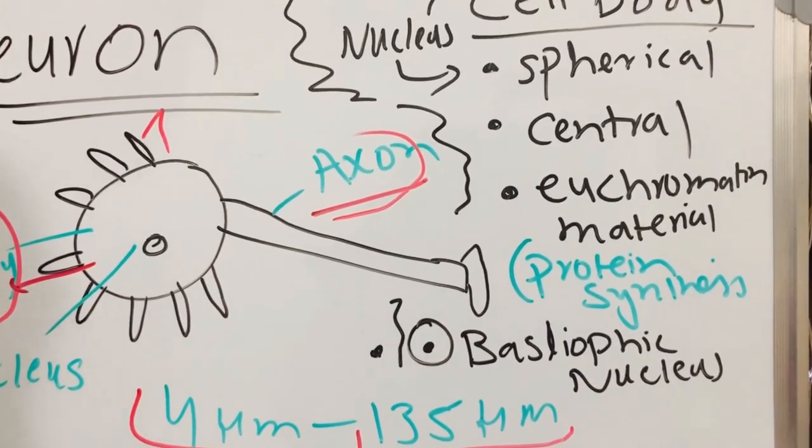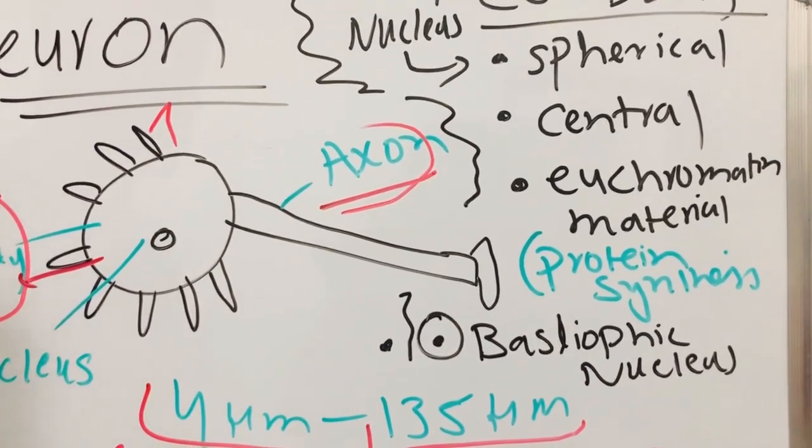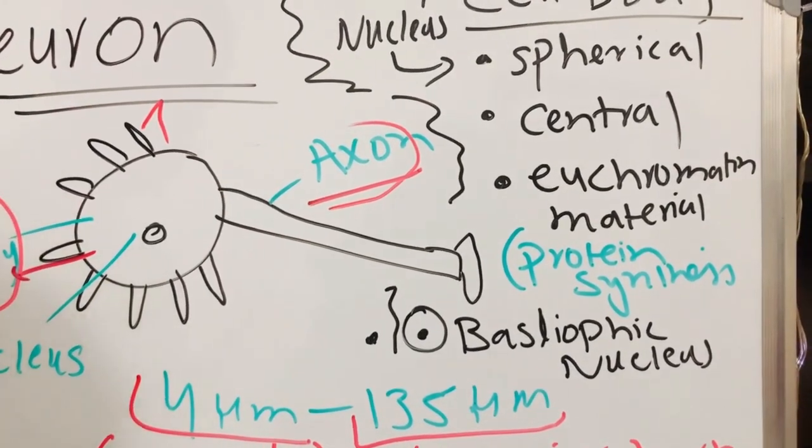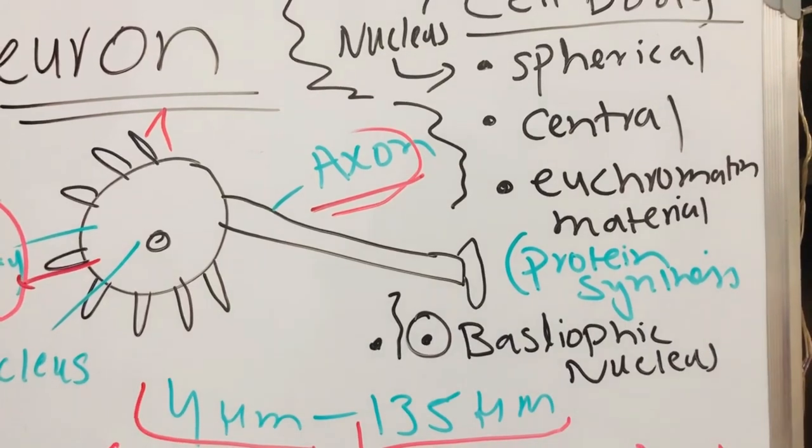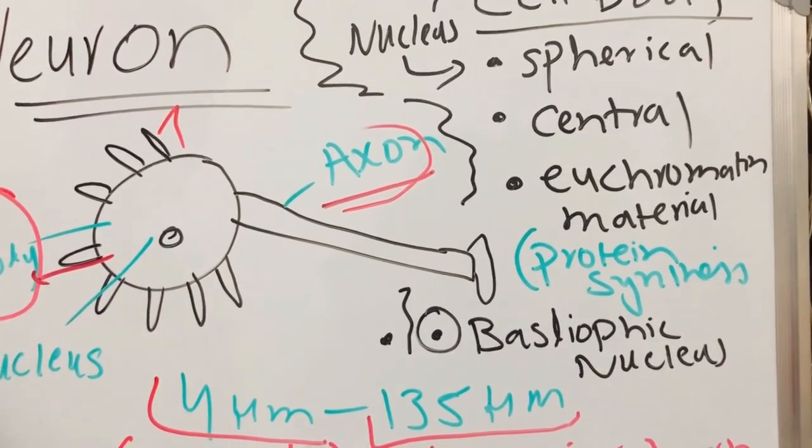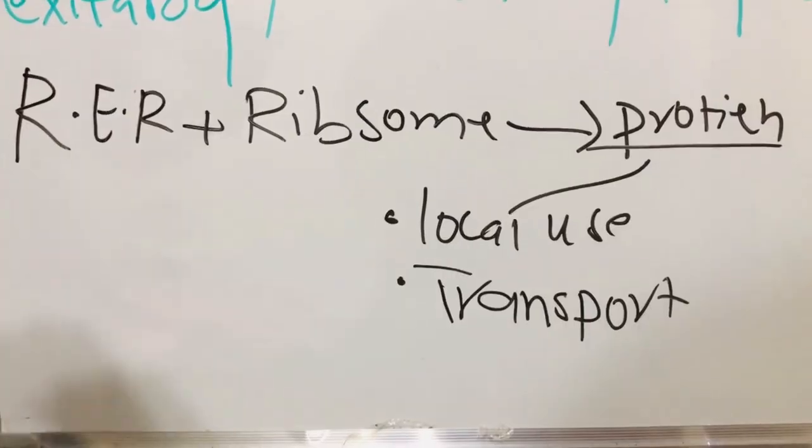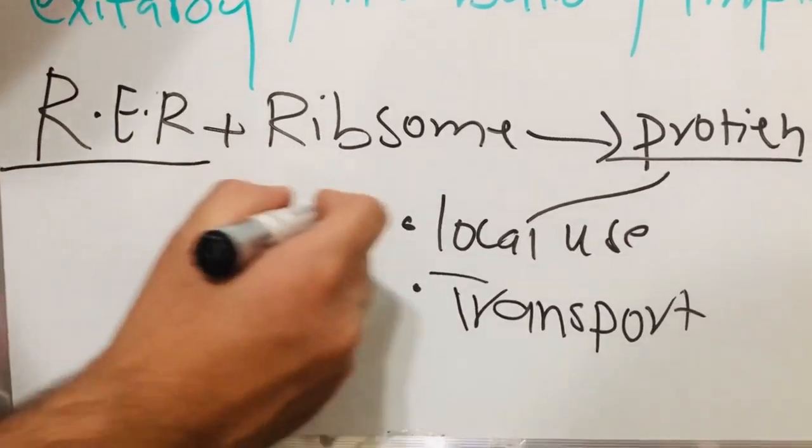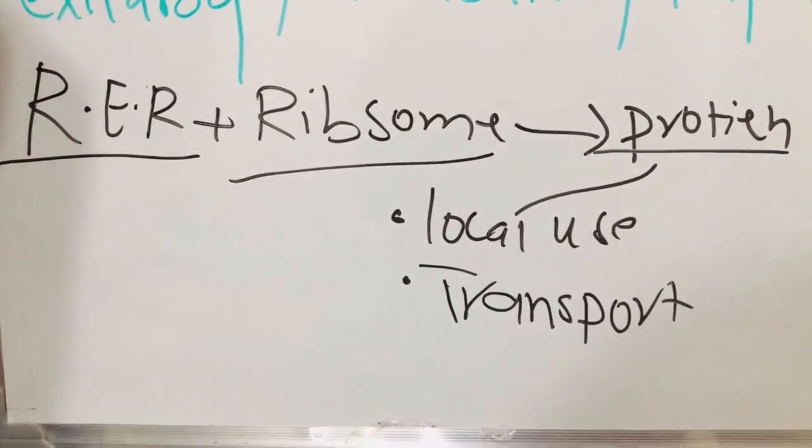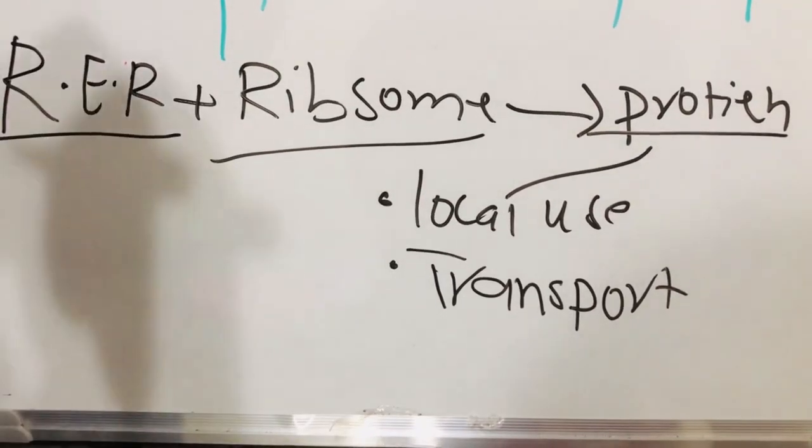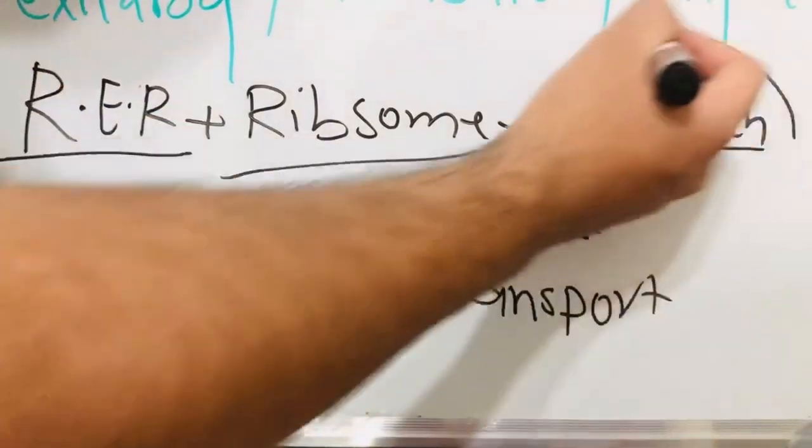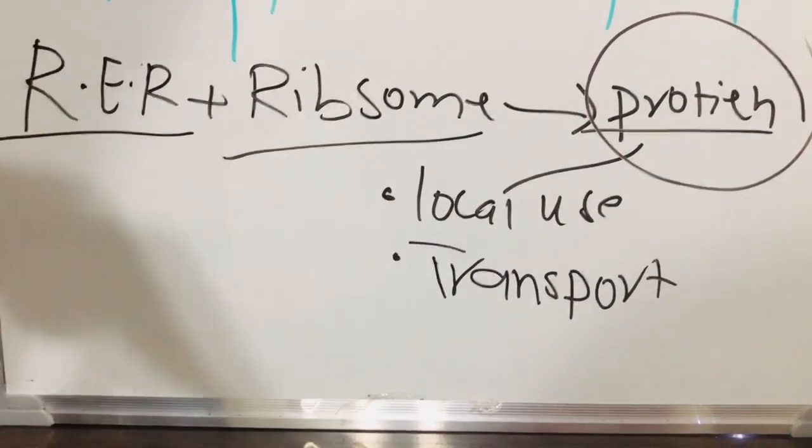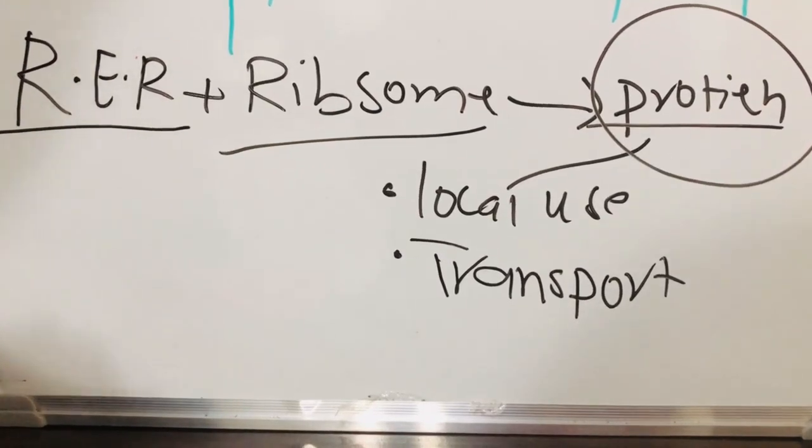The euchromatin materials are used for the synthesis of protein, and we have basophilic nucleus as well. The protein is synthesized via the euchromatin. This neuron contains rough endoplasmic reticulum and ribosomes which are helpful for the synthesis of protein. This protein is used locally or will be transported somewhere else.